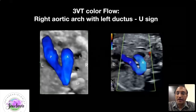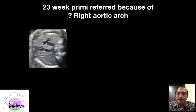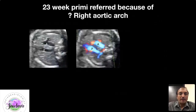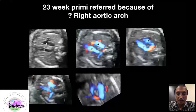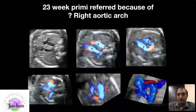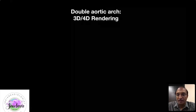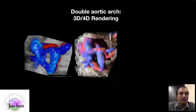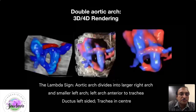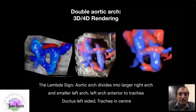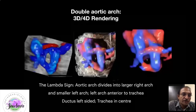Another example looked very similar to the right arch, but moving toward the three-vessel tracheal view revealed increasingly complex pictures. The 3D rendering showed a lambda sign — the aortic arch divides into a smaller left arch (marked L) and a larger right arch (marked R). These two arches form a complete ring around the trachea (marked T), and the ductus arteriosus (marked D) completes the lambda sign.